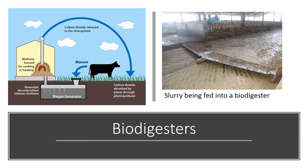Let's finish by mentioning biodigesters. Biodigesters are kind of like mechanical stomachs. You feed them with slurry — which is basically watered-down animal feces — in a big underground chamber. Anaerobic bacteria, ones that don't like oxygen, will digest this slurry and release methane gas. This methane gas is flammable, so you can burn it and use it to heat homes or cook with. You have sustainable energy production.